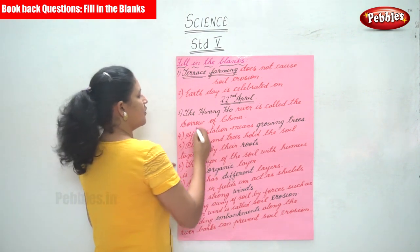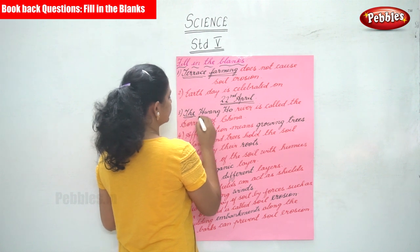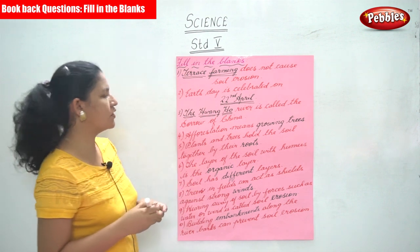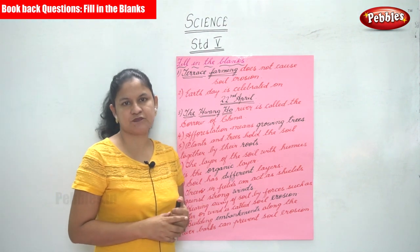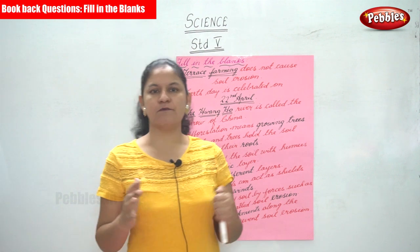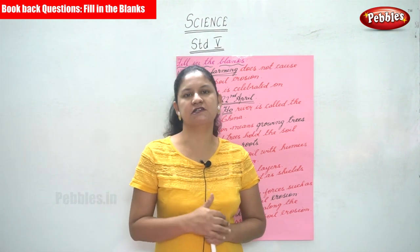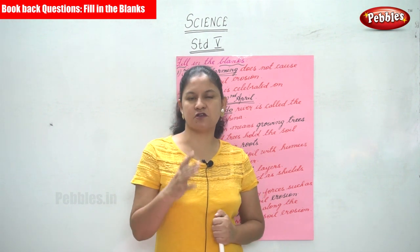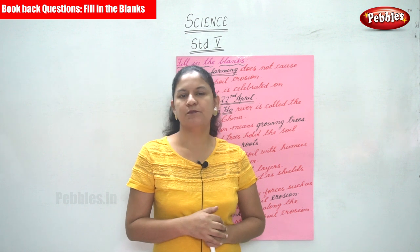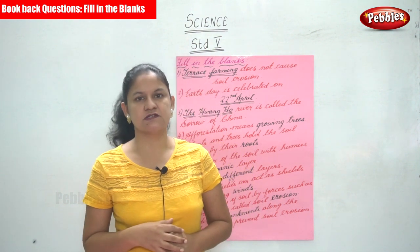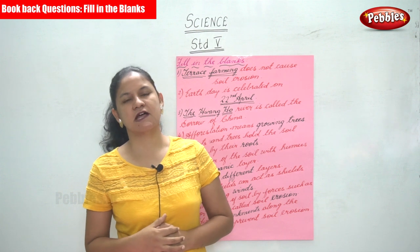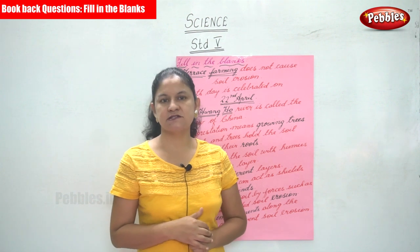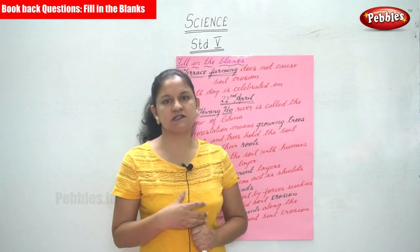The third answer is the Hwangho River. The Hwangho River is also called the Sorrow of China. In China there are many rivers, but this particular river — the Hwangho — is called the Sorrow of China because it changes its course very often, thus leading to loss of life and property. Hence it is termed as the Sorrow of China.